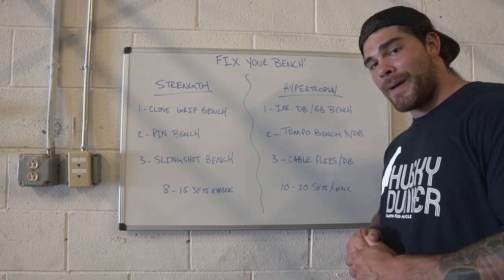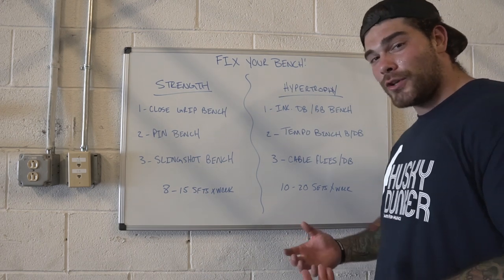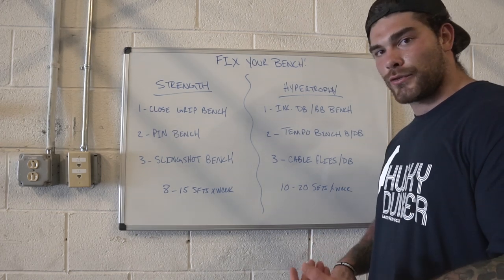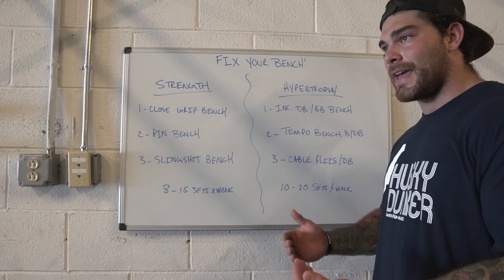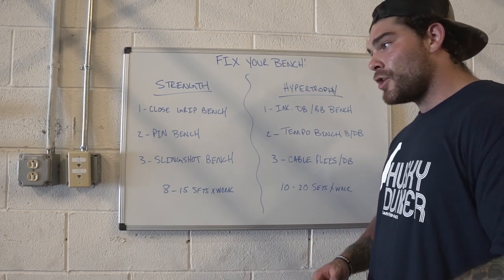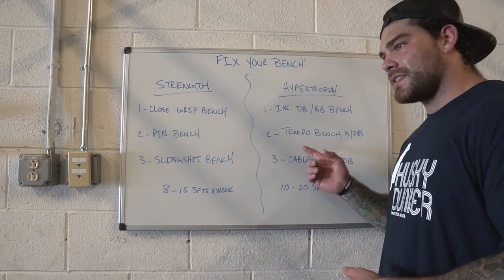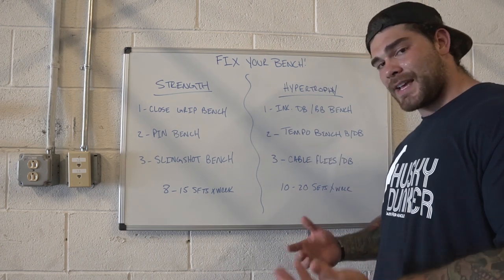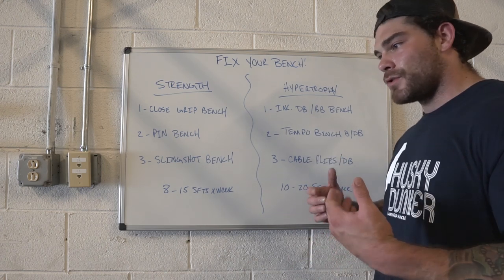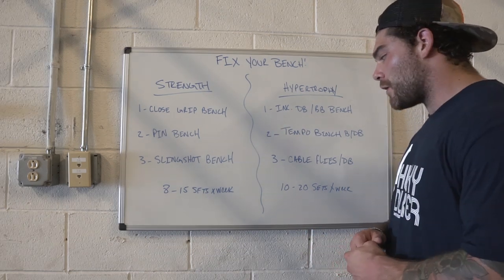Number two is tempo bench — you can do it with barbell or dumbbells and you'll accumulate a lot of volume per rep. For example, a three-zero-three: three count down, three count up, nice and smooth. Or three down and press straight up. You can play with it, but basically it helps auto-regulate intensity, so you can't go as heavy and it helps manage recovery while still driving volume.